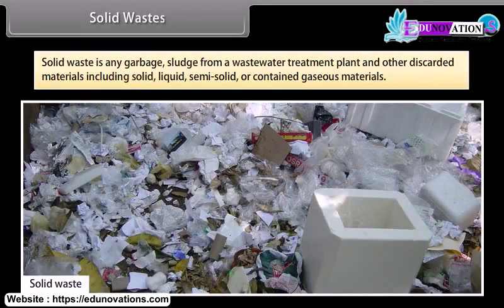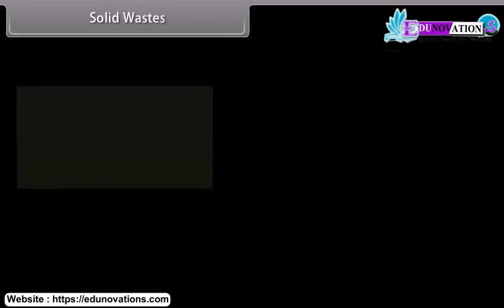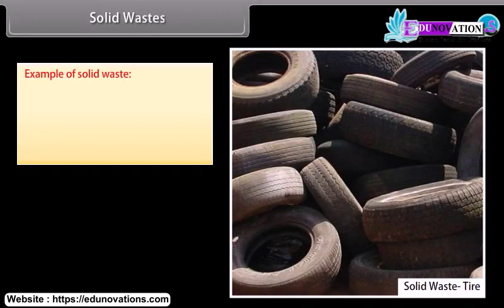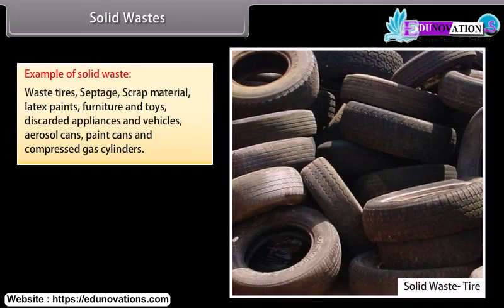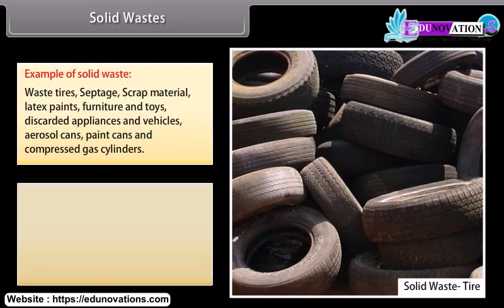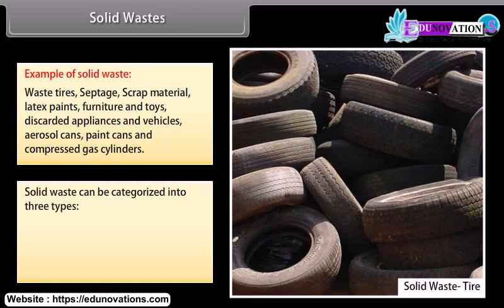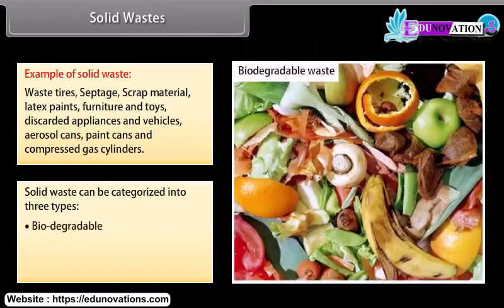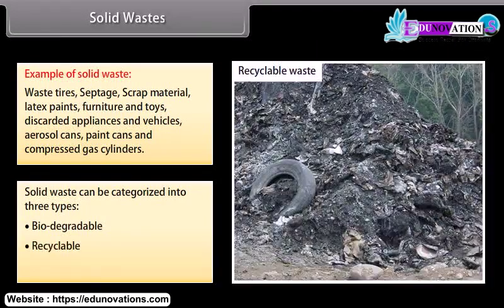Solid waste is any garbage, sludge from a wastewater treatment plant, and other discarded materials including solid, liquid, semi-solid, or contained gaseous materials. Examples include waste tires, septage, scrap material, latex paints, furniture and toys, discarded appliances and vehicles, aerosol cans, paint cans, and compressed gas cylinders. Solid waste can be categorized into three types: biodegradable, recyclable, and non-biodegradable.